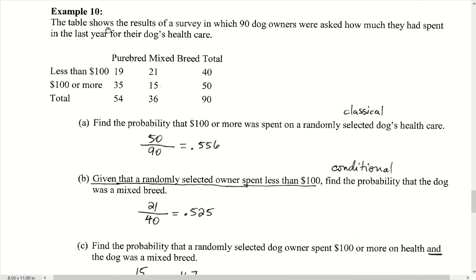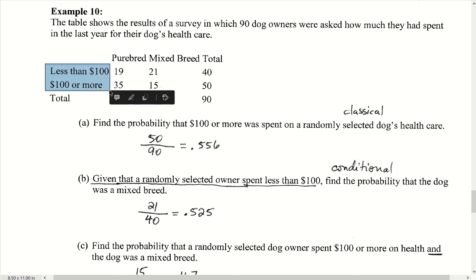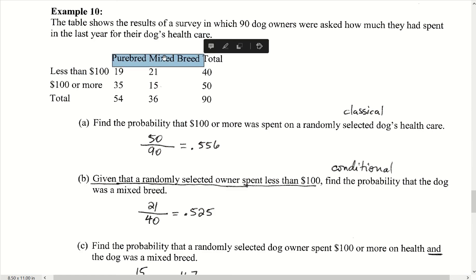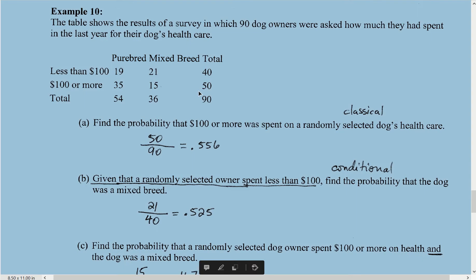The next example shows a table with results of a survey in which 90 dog owners were asked how much they spent on their dog's health care the previous year. This is another stratified table broken down by amount spent — less than $100 or more than $100 — and by breed type, whether the dog was a purebred or a mixed breed.